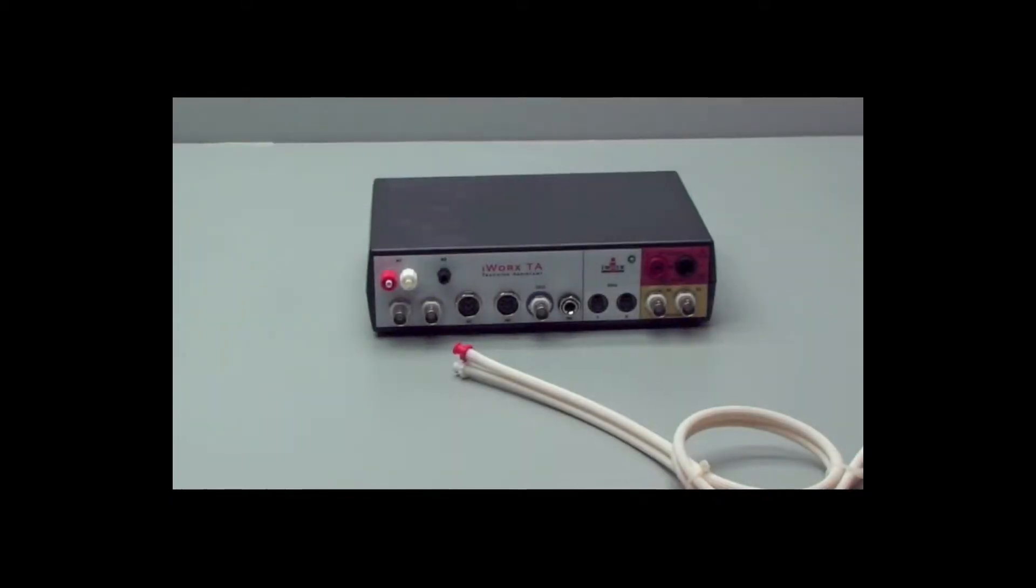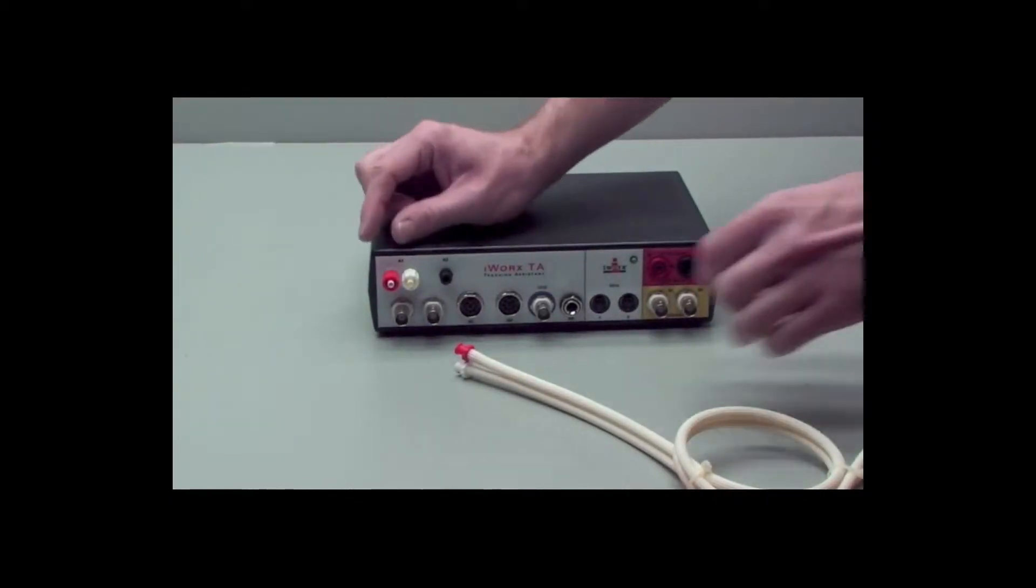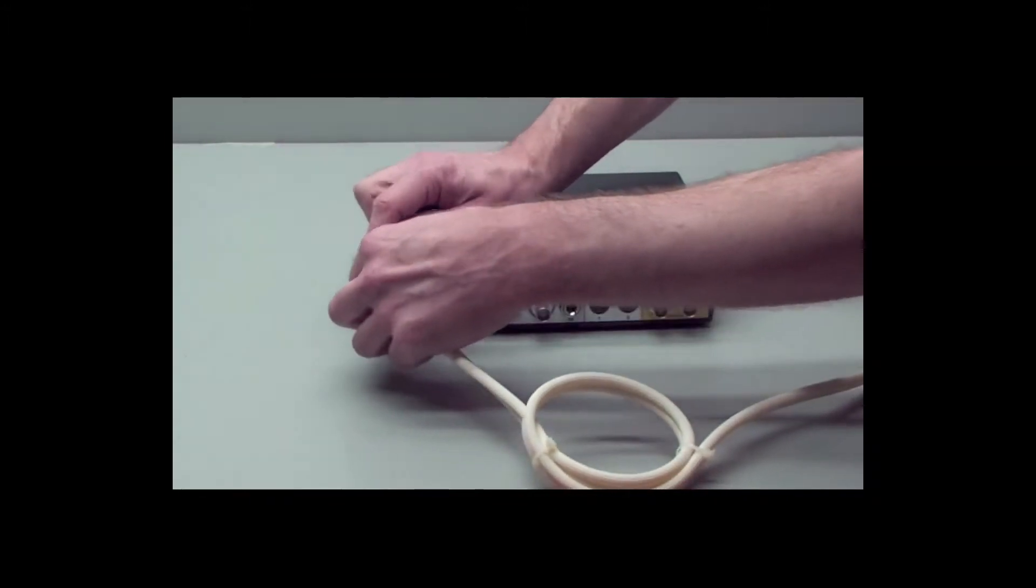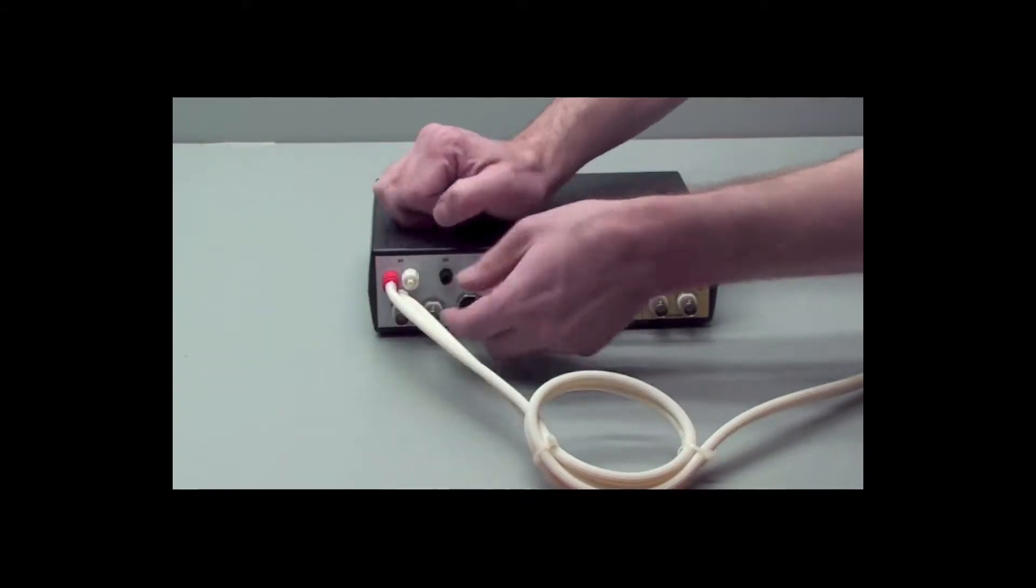Take your flow head tubing, and red goes to red on the front of the TA, and white goes to white.